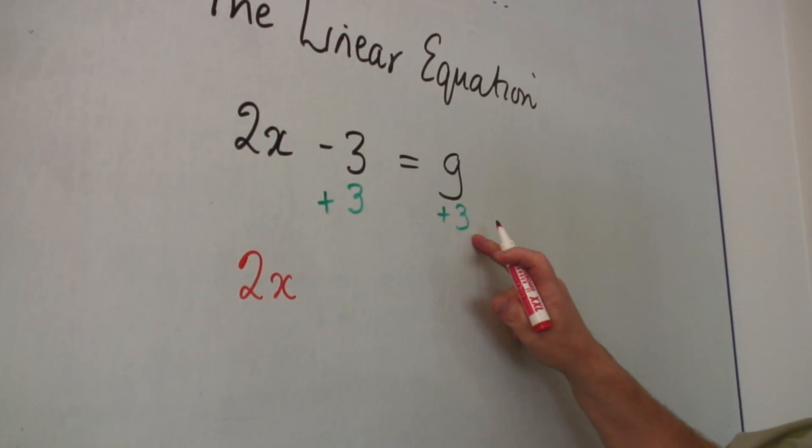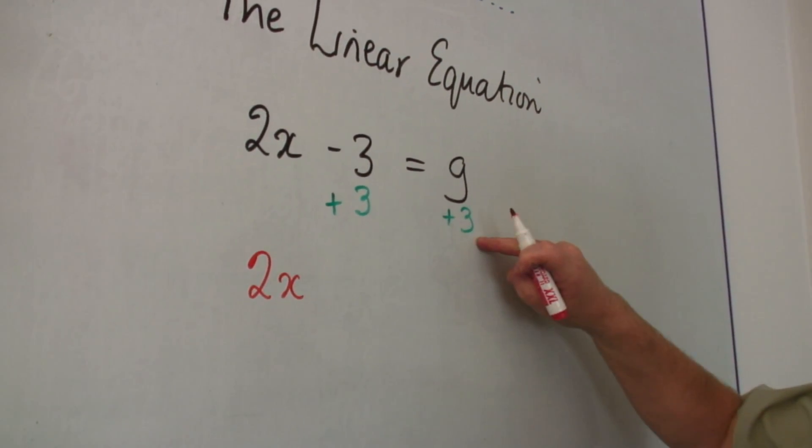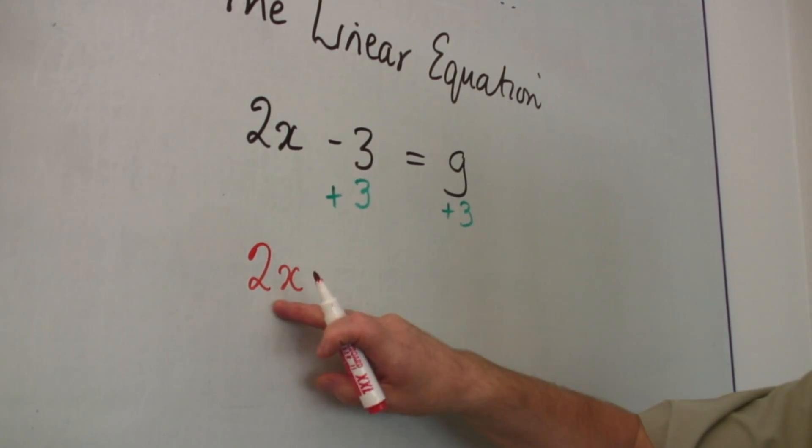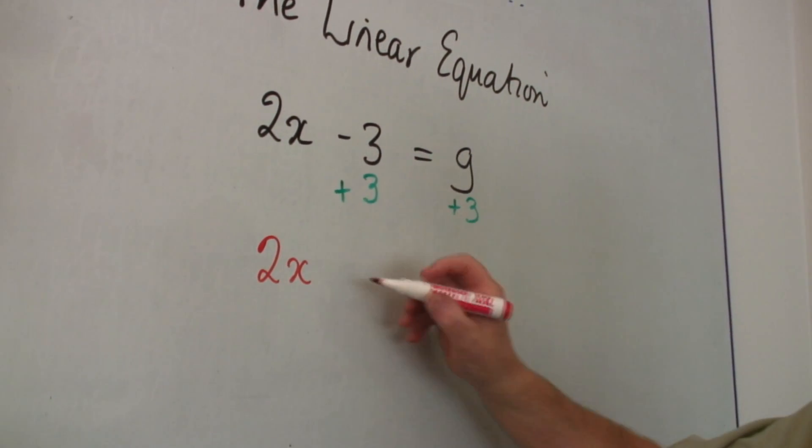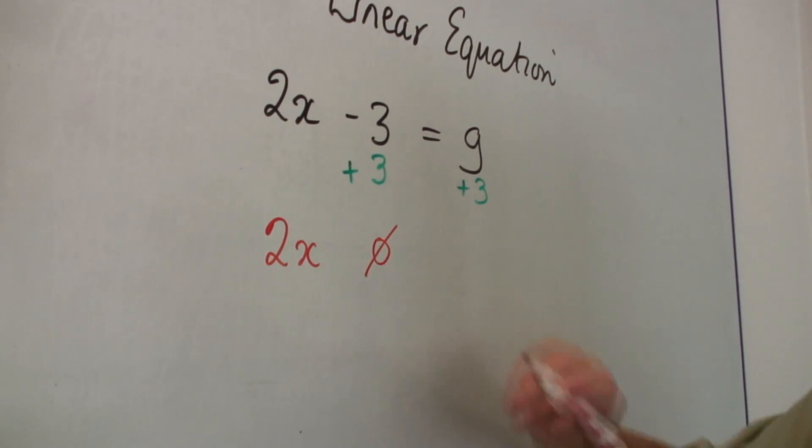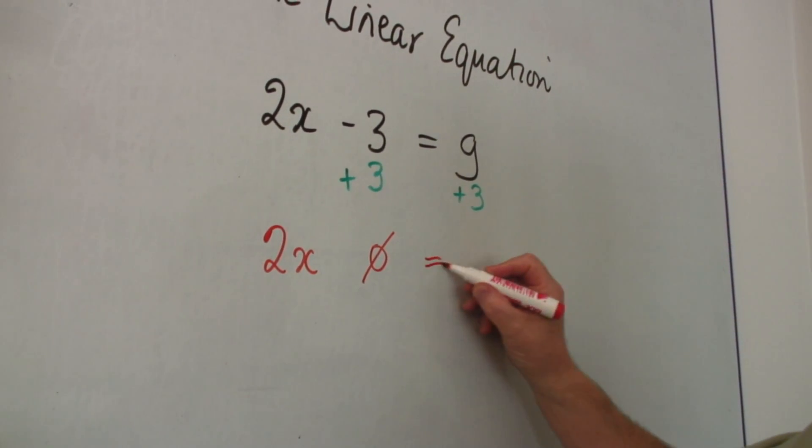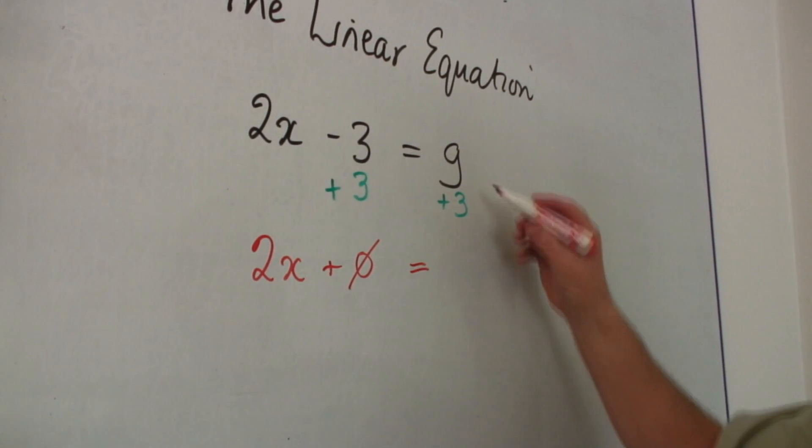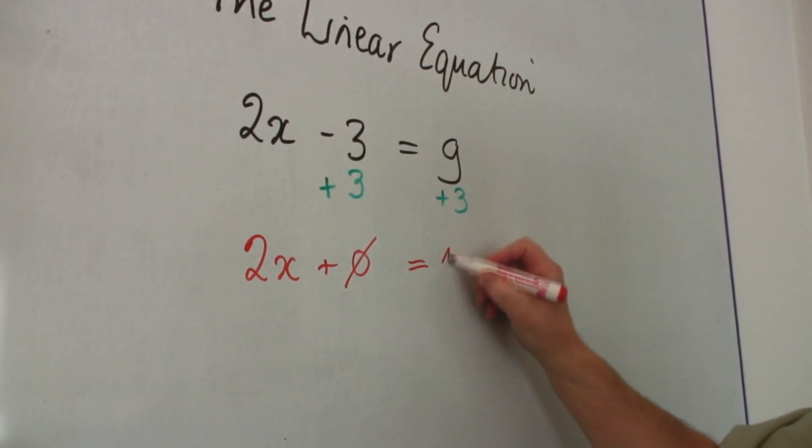And on the right hand side, 9 plus 3. So it's 2x minus 3 plus 3 is 0. So I don't need it. Equals 9 plus 3 is 12.